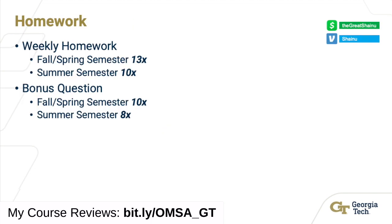Let's talk about homework. You have 13 weekly homework assignments if you're taking it in fall or spring semester, and 10 if you take it in summer. I'll tell you later which semester I recommend. You also have bonus questions — the 2.5% is split across 10 bonus assignments that accompany the weekly homework. In fall and spring you have 10 bonus assignments, and in summer only eight.